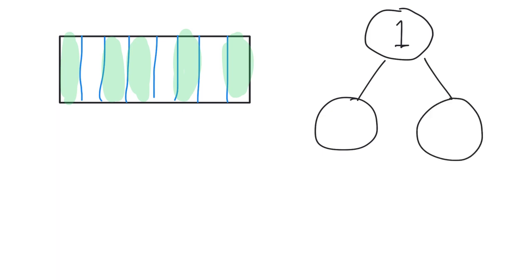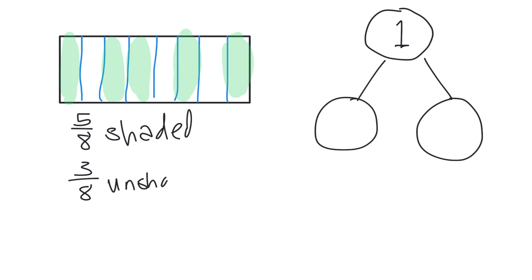Because I can see that five out of the eight are shaded, and I can see that three out of the eight are unshaded, that tells me that the number bond is going to be: five eighths are shaded — I'll do that in blue — and three eighths is unshaded. So here's our number bond: one whole represents this entire rectangle, five eighths represents the pieces that have been shaded in, and three eighths represents the pieces that have not been shaded in.